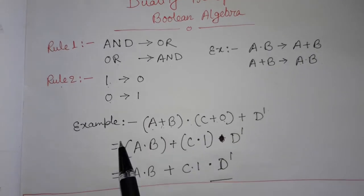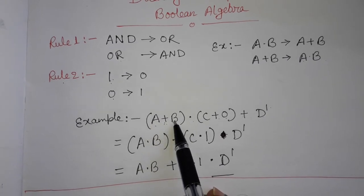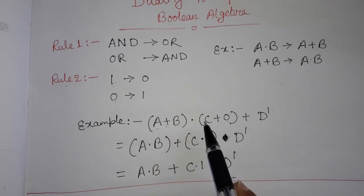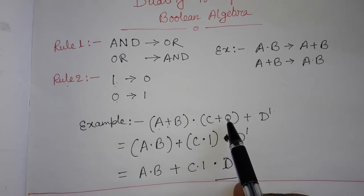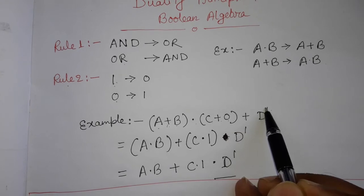One example we have taken here: for example, (A OR B) AND (C OR 0) OR D complement.